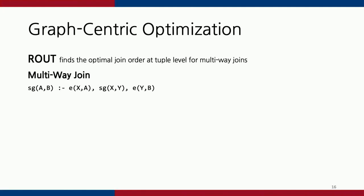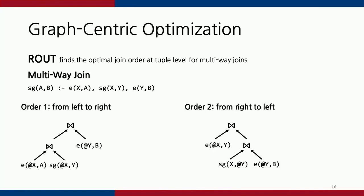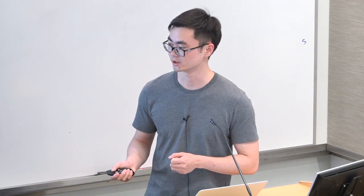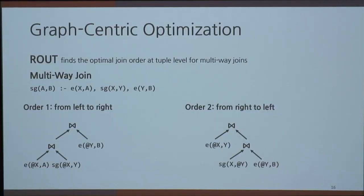The second operator is route, which is for multi-way join queries. Let's look at one example — the classic same-generation query, which generates a pair of vertices at each generation starting from a root. This is essentially a three-way join where we join the Edge table with the SG table, and then join with the Edge table again, to generate new tuples in the SG table. Because this is a three-way join, at the relation level there are two orders. Order one is left to right: join Edge and SG tables, generate intermediate results, then join with Edge again. Order two is right to left: join SG and Edge tables, then join Edge with the intermediate results.